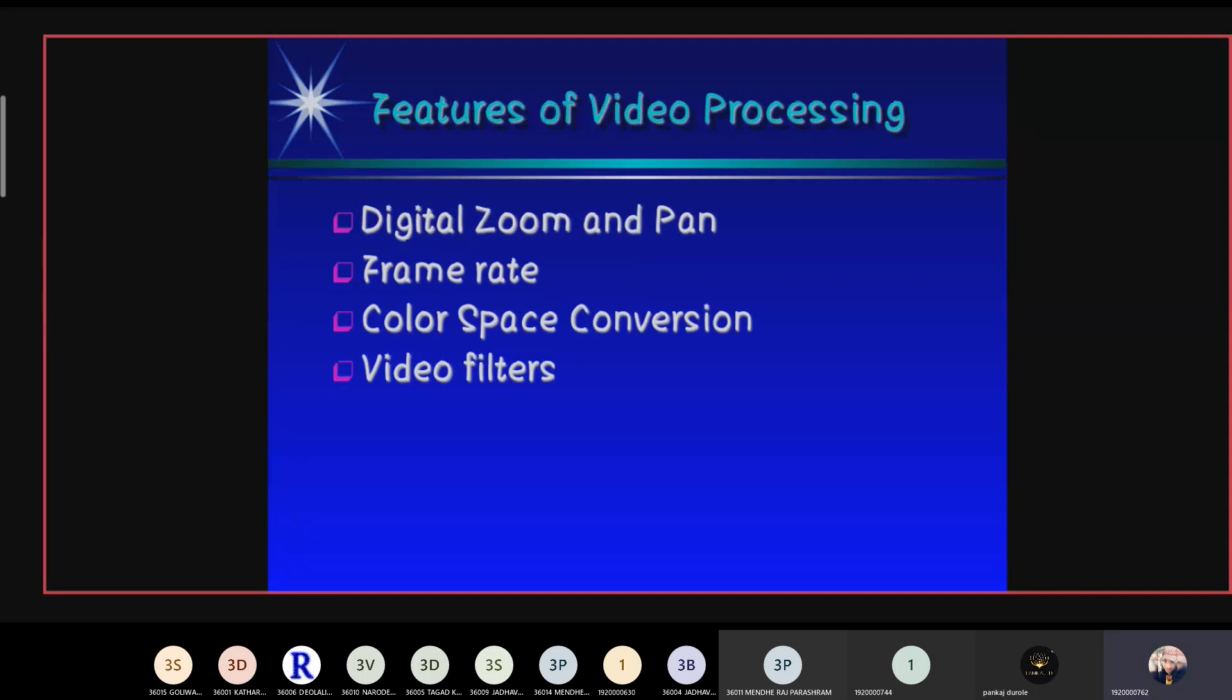Features of video processing: First is digital zoom and pan. Digital zoom and pan is the method of increasing the angle of view of digital photography or video image. It is done by cropping an image down to a center area with the same aspect ratio as the original.